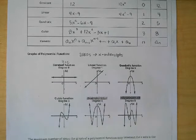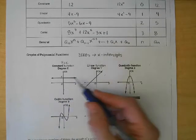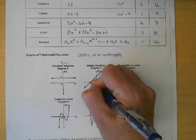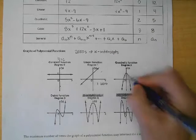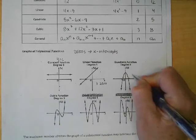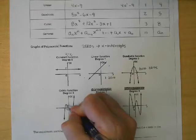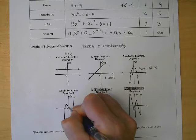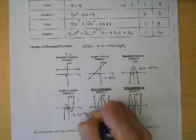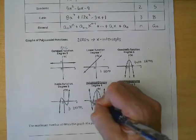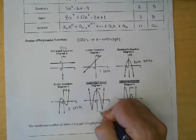It doesn't include the y-intercept, just the x. This one has zero zeros, this has one zero, this has two zeros. Right here we have three zeros, right here one, two, three, four.